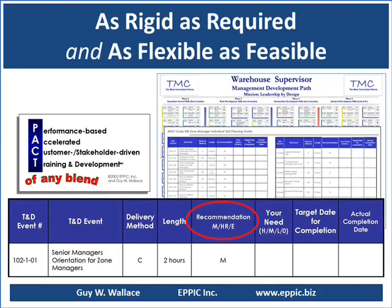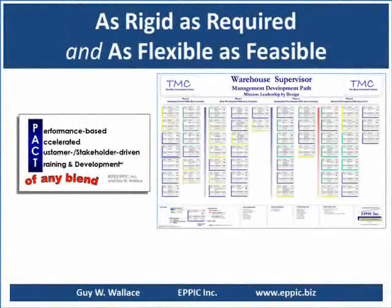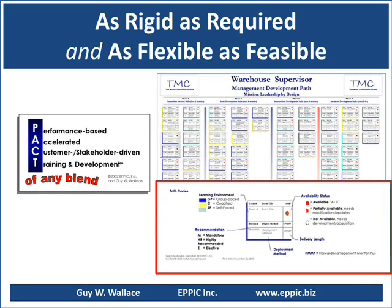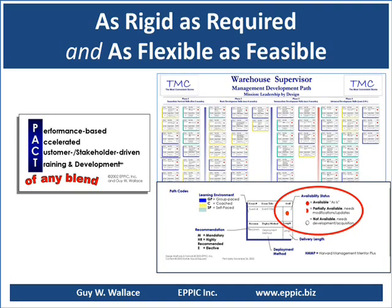PAC enables scrutiny of all of the content that is recommended, mandated, or elective. The intent of the training and development path is to be as rigid as required and as flexible as feasible. The coding of an initial training and development path includes content that is available as is, or partially available if that's the case, and also identifies the gaps.